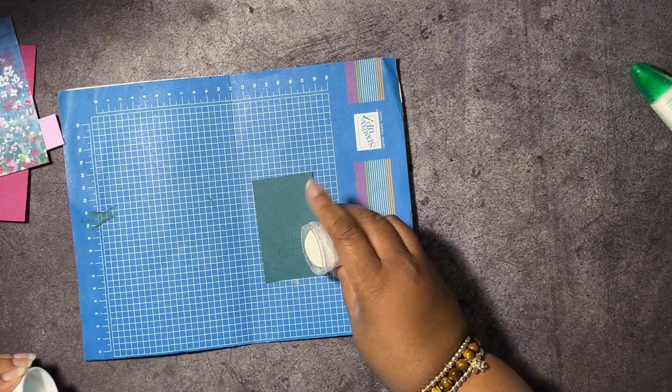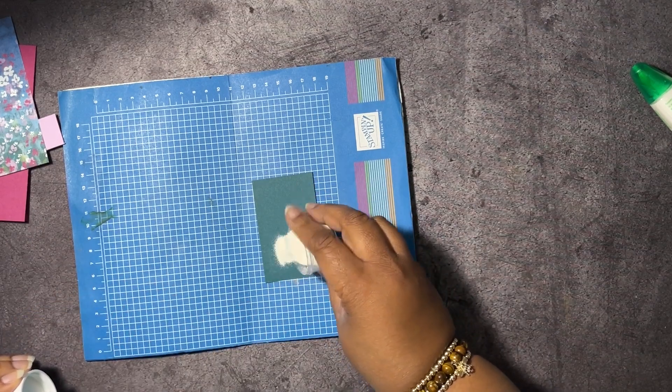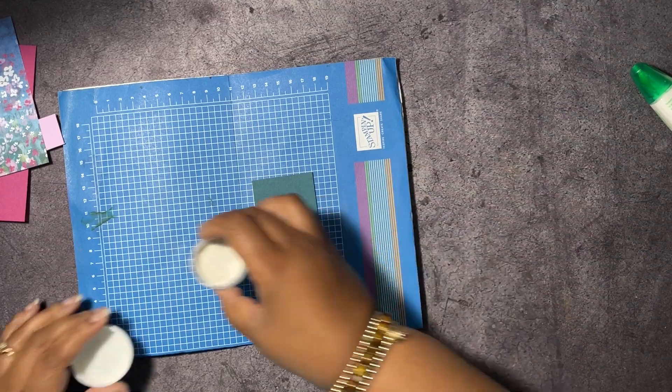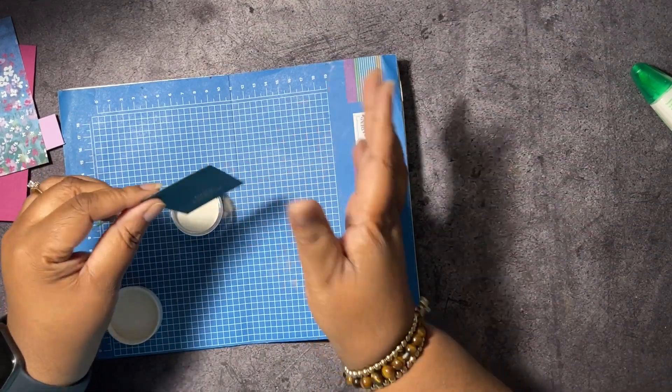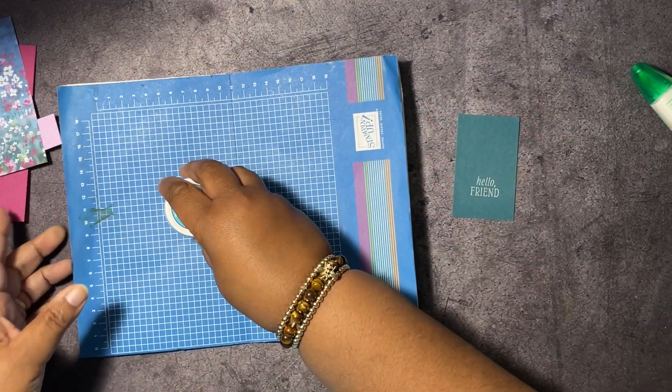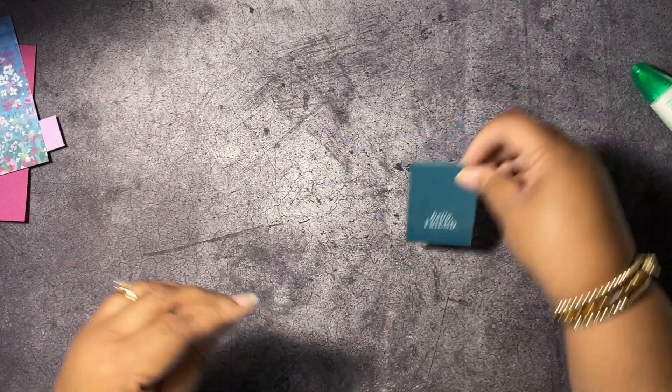We are wanting to do some white embossing powder, so we're going to get that on there. Oh boy, it's really coming down out there. We're going to get this off. That's pretty good. Let's move this to the side and do some heat embossing.